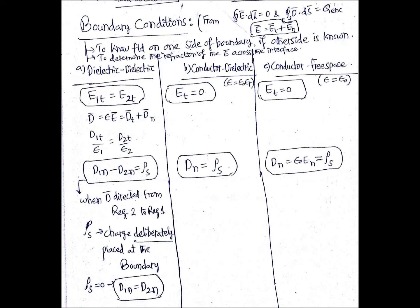In the case of a conductor-free space boundary, the tangential component of E is 0 and the normal component of D is ε0·En, which equals ρs. That's it — thank you.